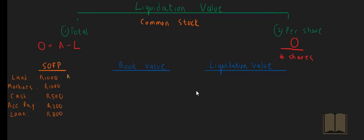There is a long term loan worth $800. As we know, land is an asset, machinery is an asset, cash is an asset, accounts payable is a liability.